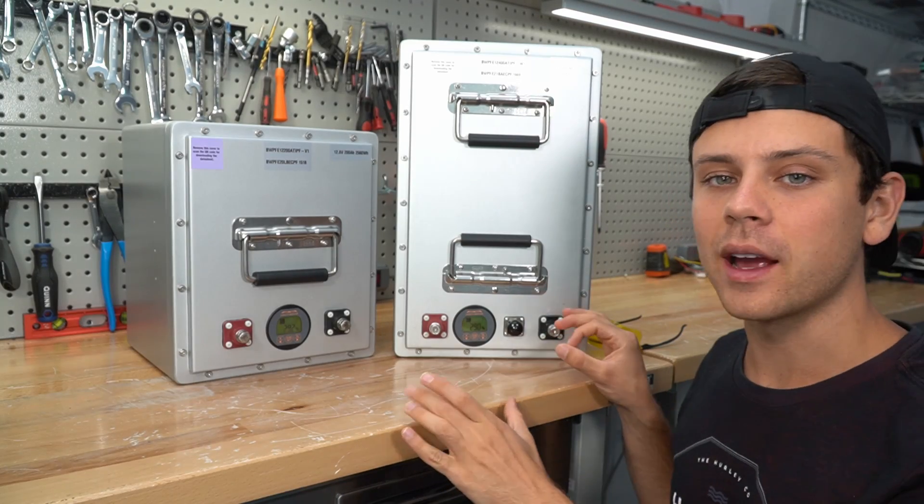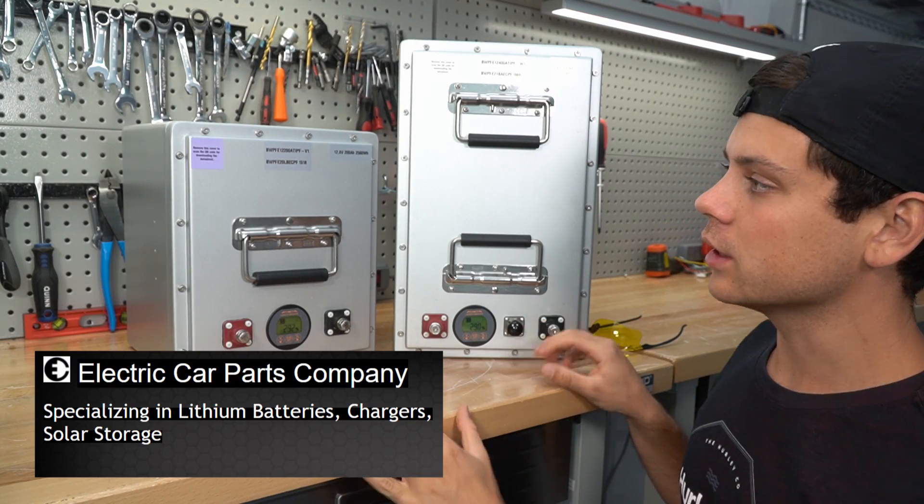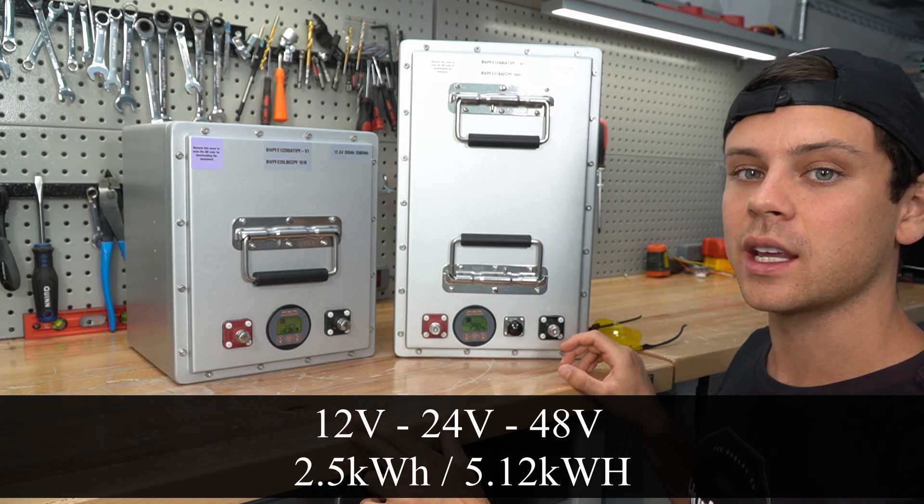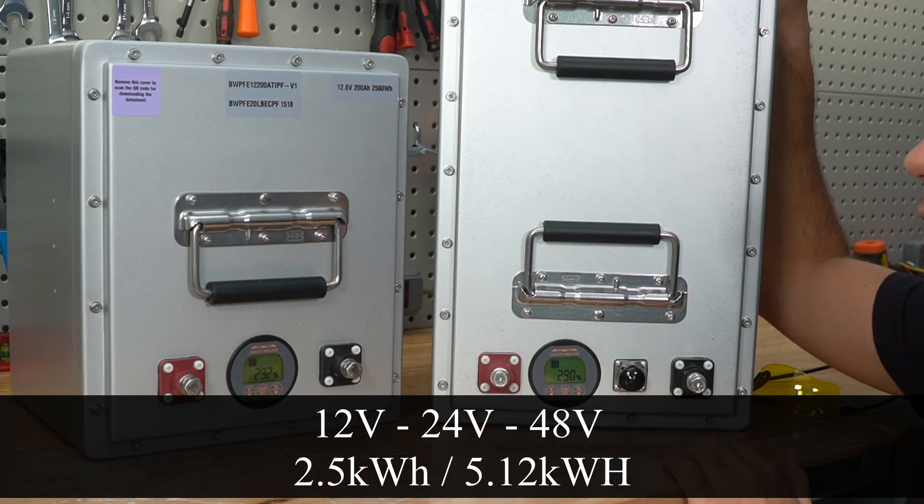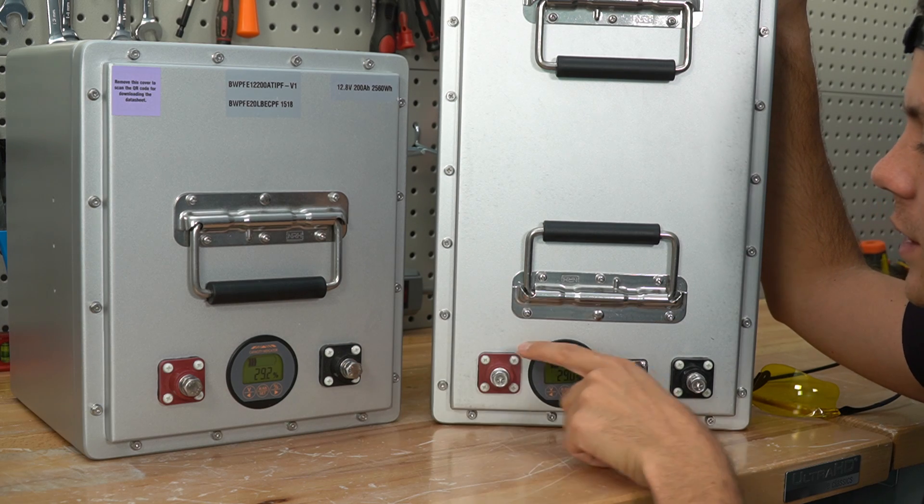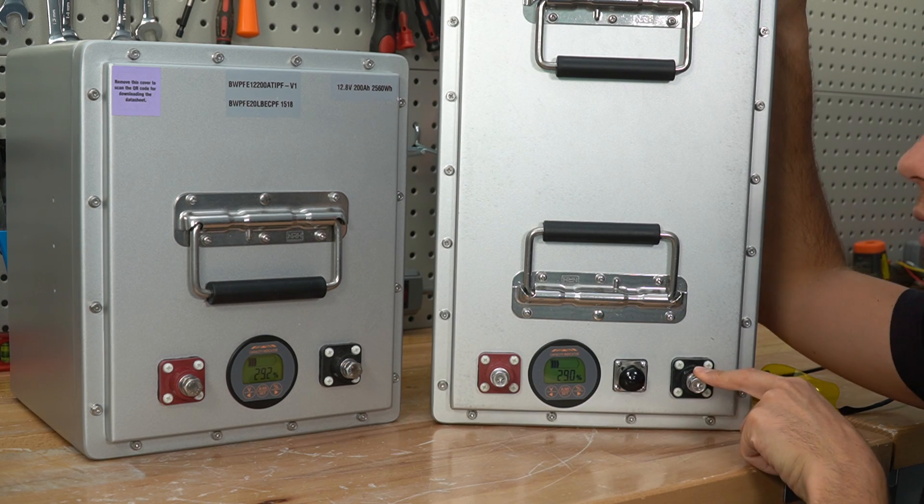Today we're reviewing a new battery by Electric Car Parts. These are lithium iron phosphate batteries and they come in a variety of voltages and capacities. Both packs are in a steel enclosure similar to the SoK. They also have the same terminals as the SoK battery.